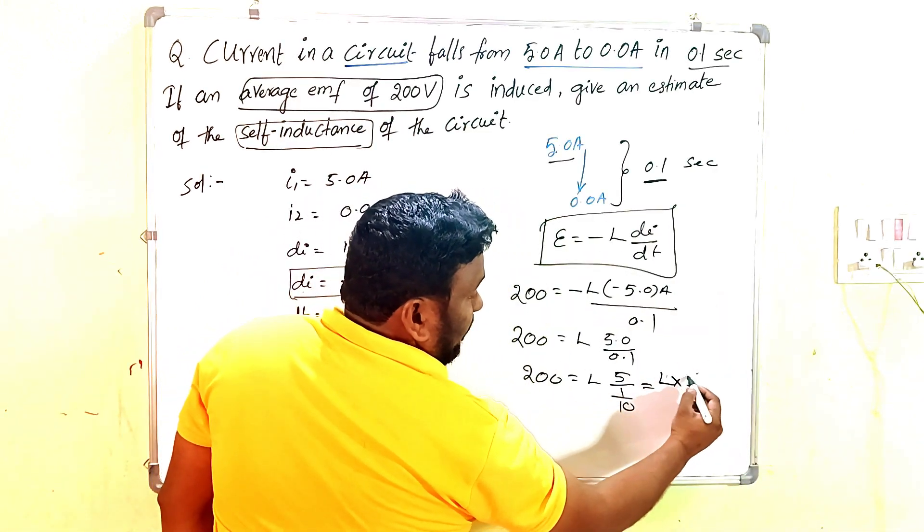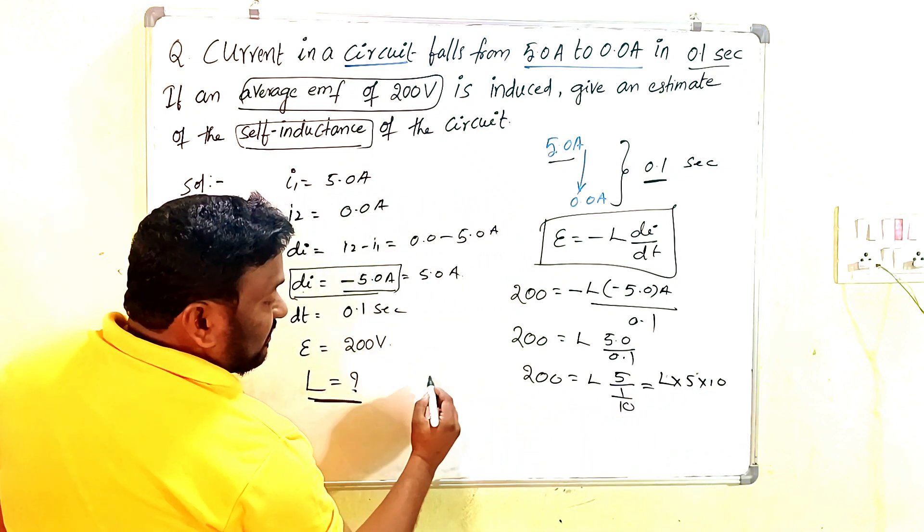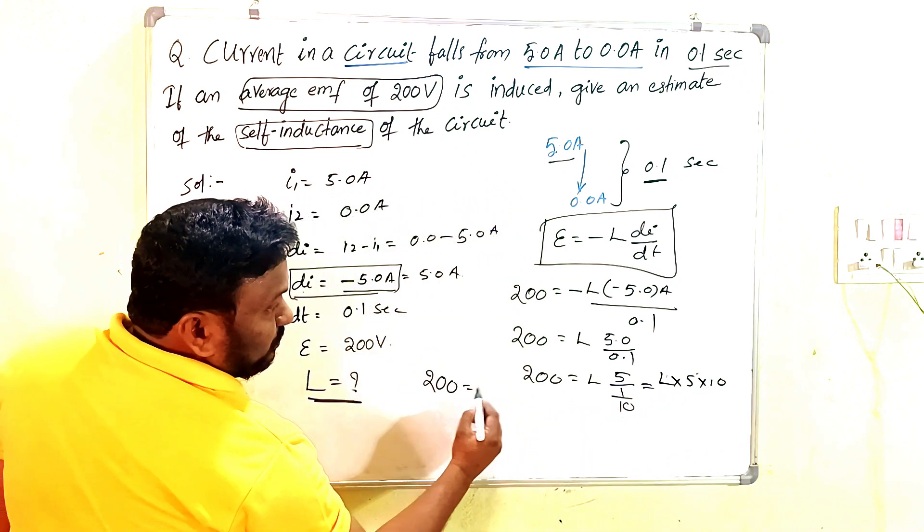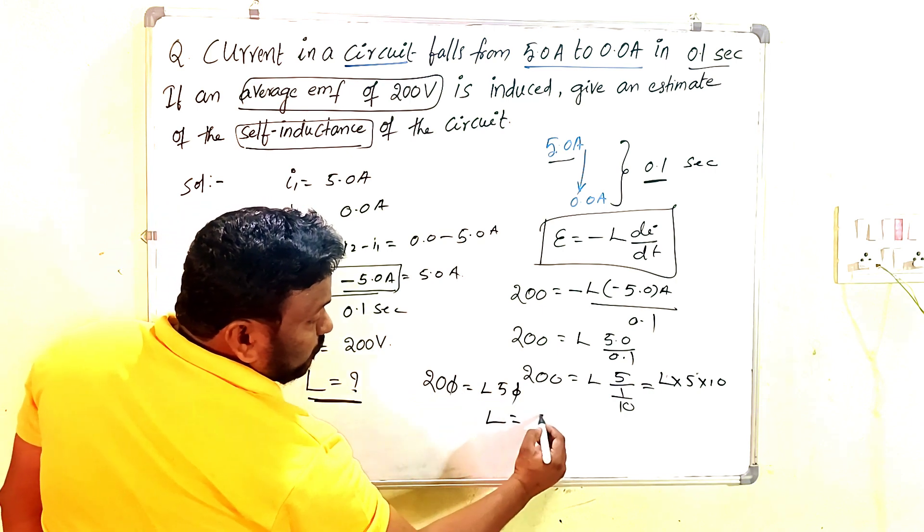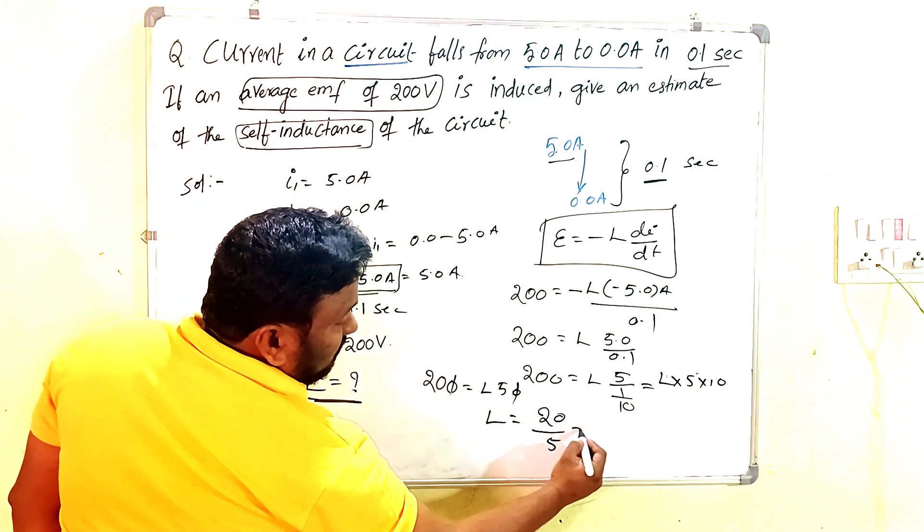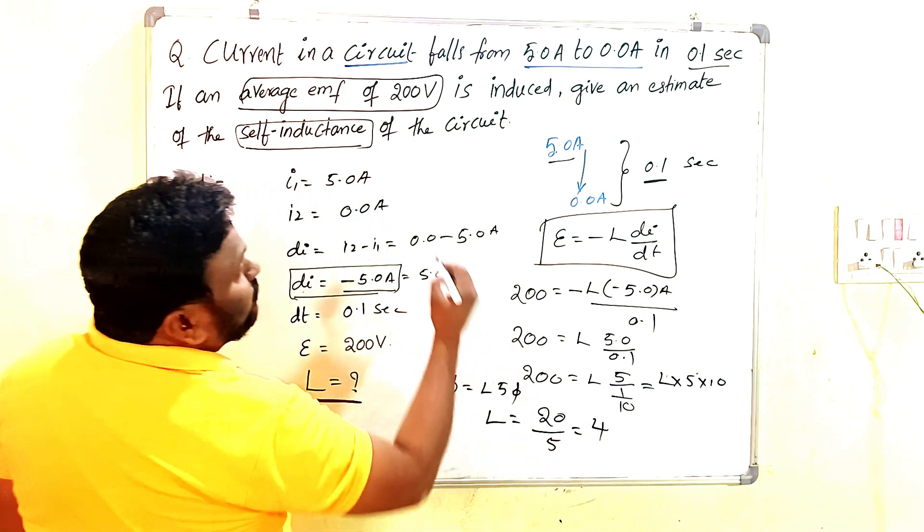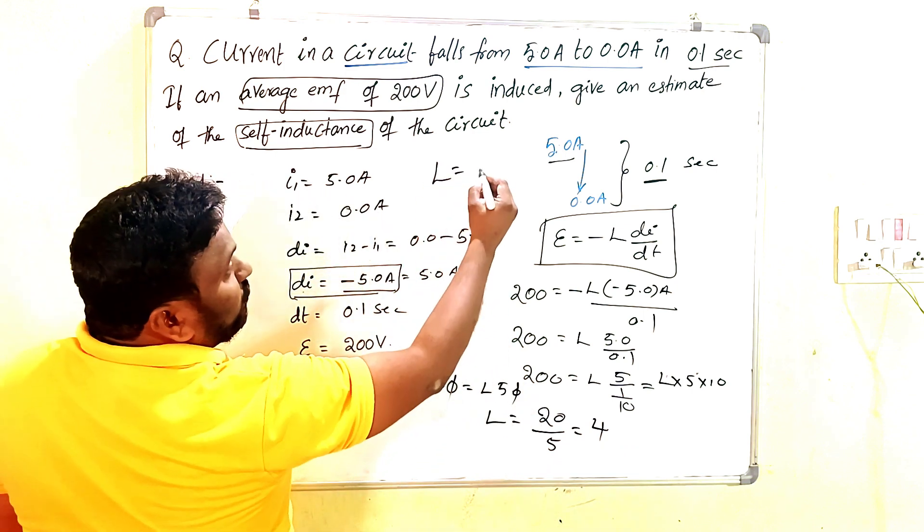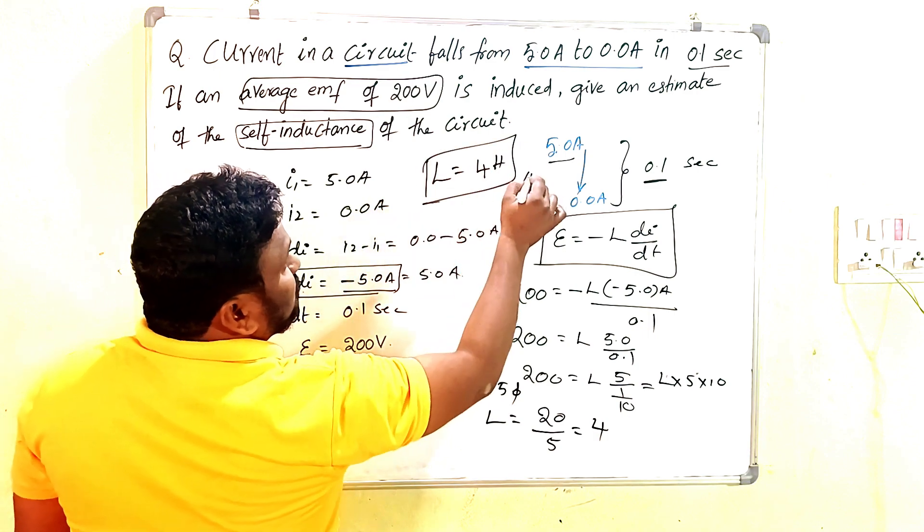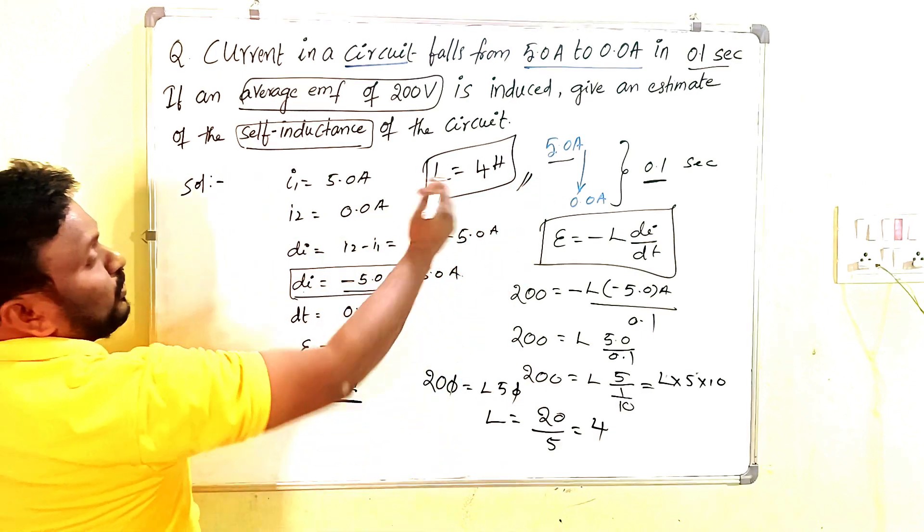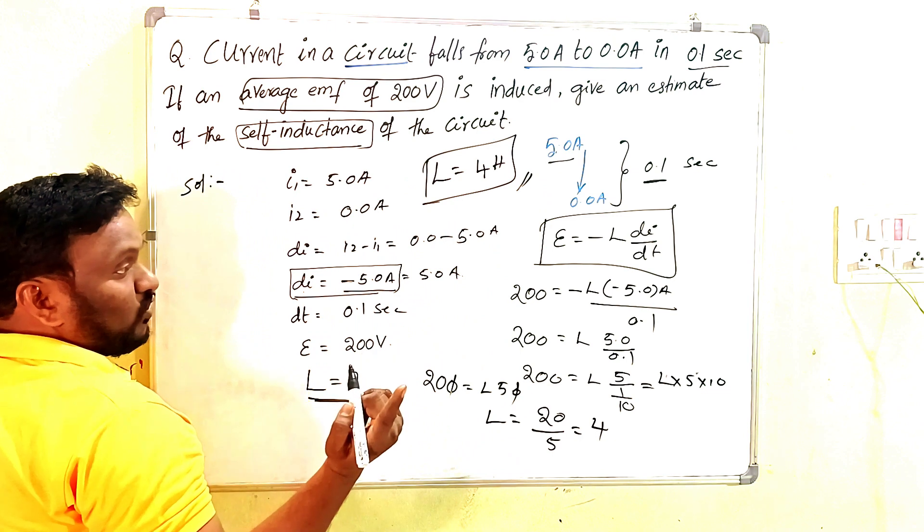So 200 = L × 50. Canceling, L = 200 divided by 50, which equals 4. Therefore, L is 4 henry. This is the answer.